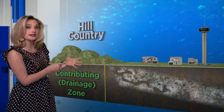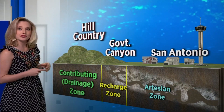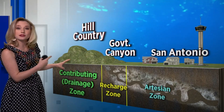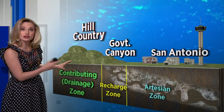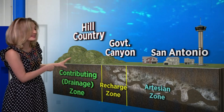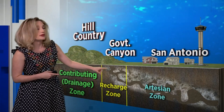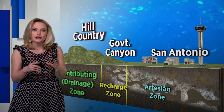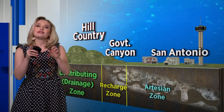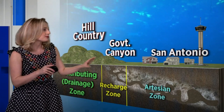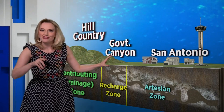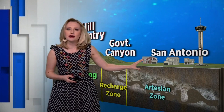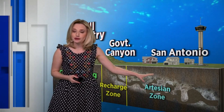Here is a cross section of what that aquifer system looks like. Here we have the contributing zone, which is sometimes called the drainage zone or the drainage area, and that's in the Hill Country. Next, the recharge zone, which features areas of the aquifer which are fractured and visible on land. Think of areas like Government Canyon, where you can see the holy limestone features everywhere. And then finally, the artesian zone, where San Antonio lies.